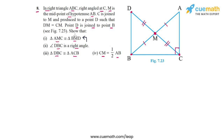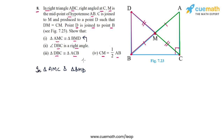For part one, we need to show triangle AMC is congruent to triangle BMD. Let me highlight these two triangles. Triangle AMC is this triangle and triangle BMD is this triangle. We have to show these two triangles are congruent, which is quite evident from the figure.